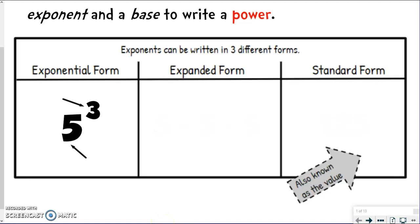One way is exponential form. Kind of makes sense with an exponent. And so we've got five to the third power. So this is a power. That little 3 is the exponent.